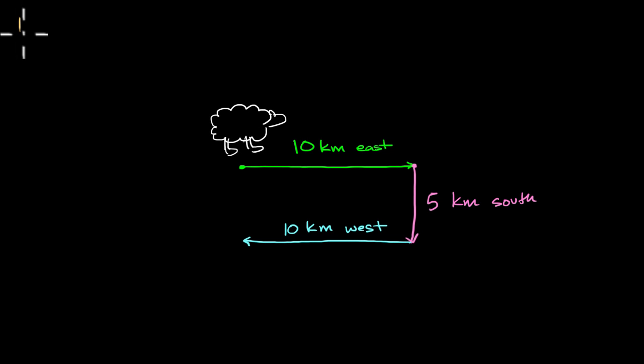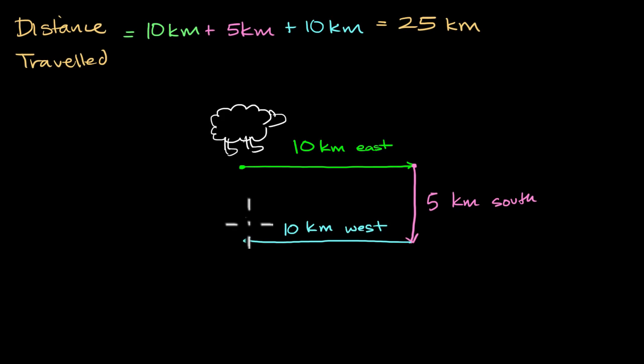So let me write this one down. This is an important concept. Distance traveled. And this would be the total length of its journey or the total length of its path. So the distance traveled in this situation would be 10 kilometers plus 5 kilometers plus 10 kilometers, which would give us 25 kilometers. So some of you might have said that the sheep traveled 25 kilometers. If that's what you came up with, what you calculated is the total distance traveled.